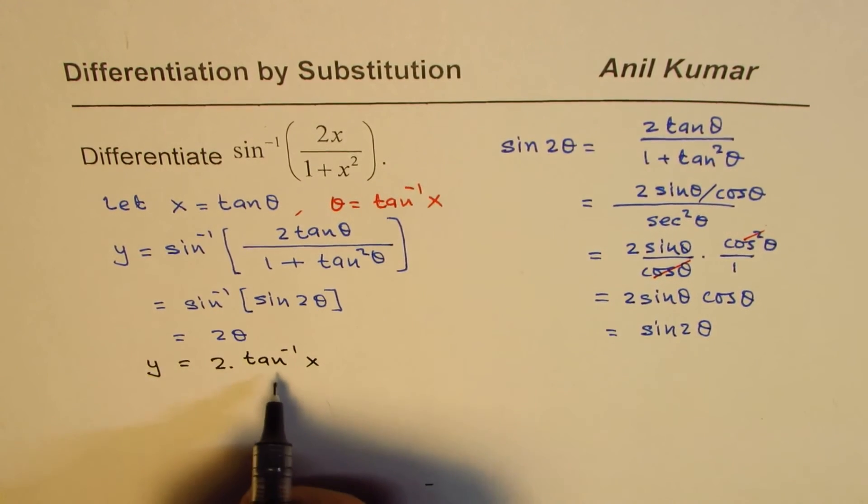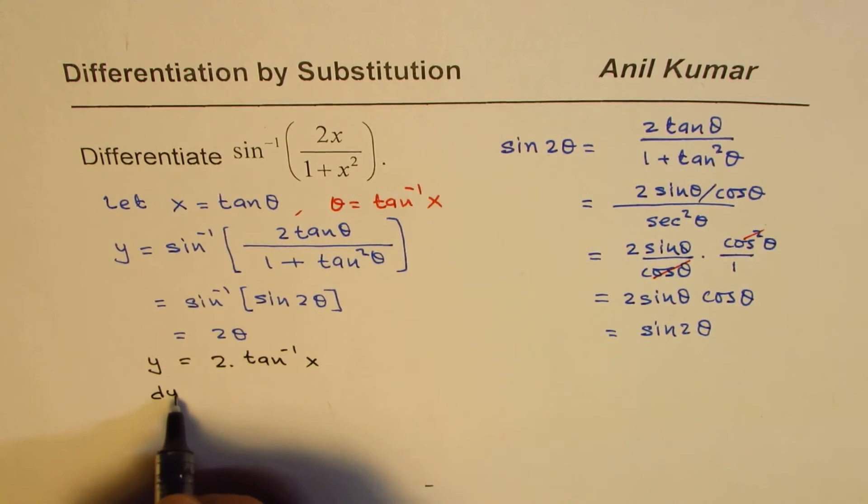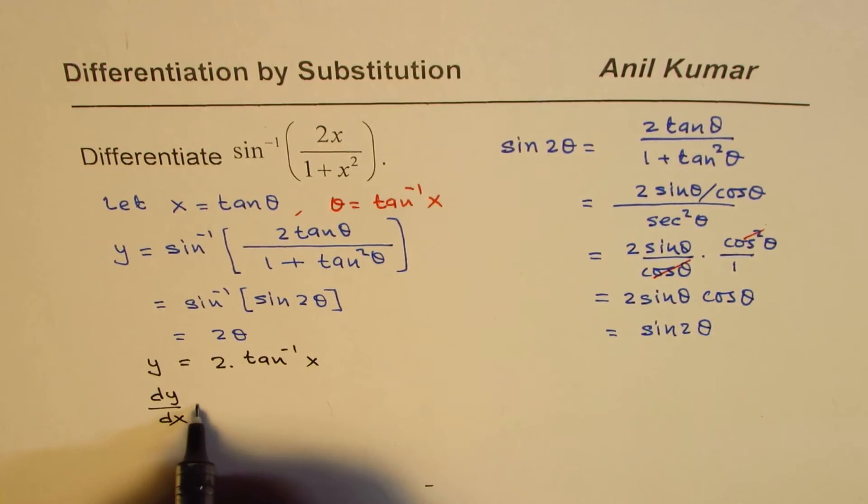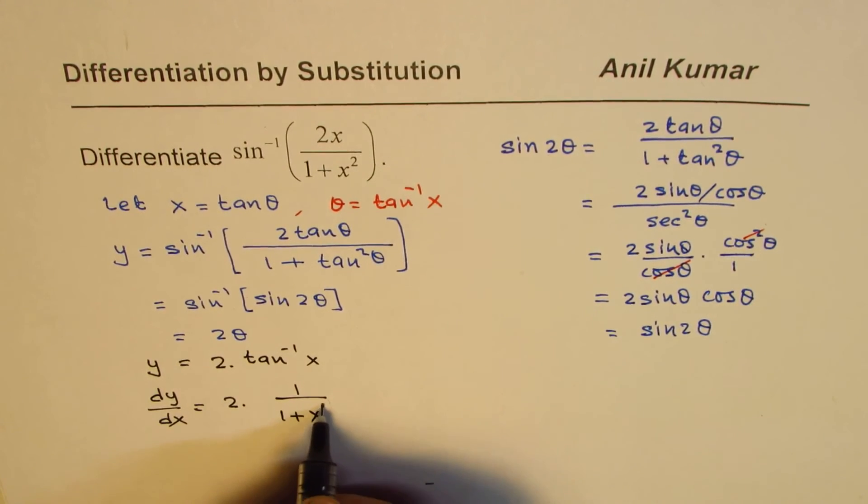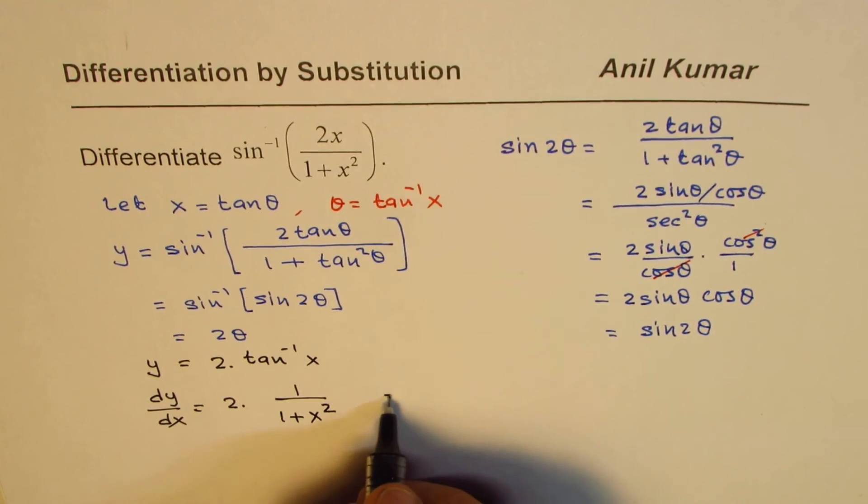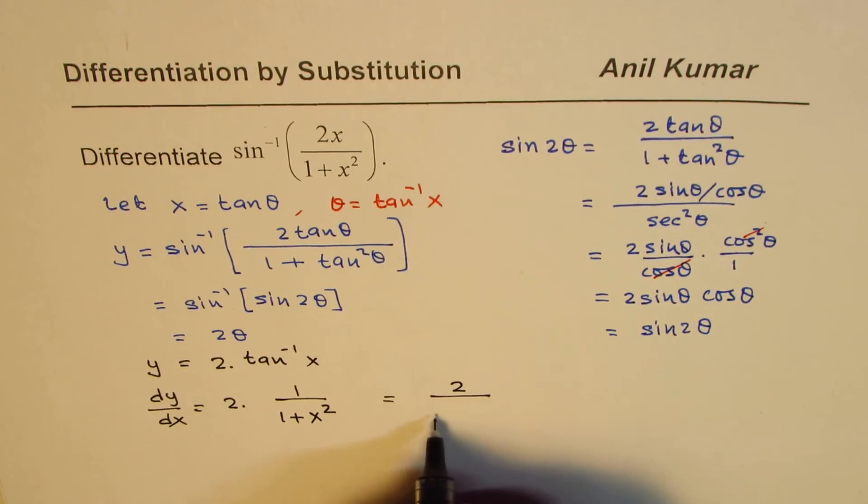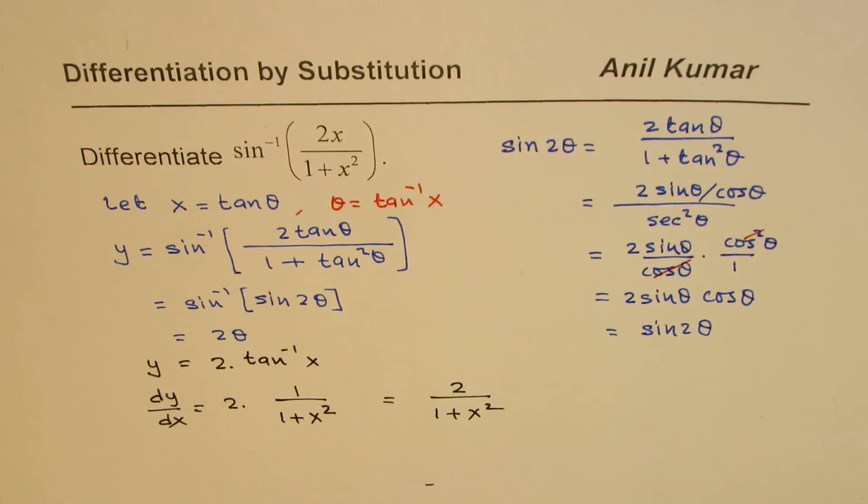The derivative is very simple. We just need to apply the formula for tan inverse x. dy dx equals 2 times derivative of tan inverse x, which is 1 over 1 plus x square. So we get our result as 2 over 1 plus x square. That is the derivative for the given function.